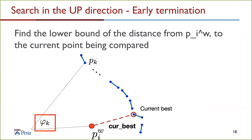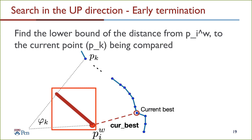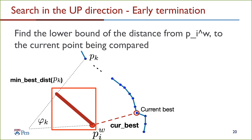To implement early termination, we define the angle in radians between the current transform point and the point being compared p_k as phi_k. We wish to compute the distance between the transform point p_i^w and the line connecting the origin of the scan (the reference point) and the current point p_k. This distance is the shortest distance that can be achieved between p_i^w and any point along the line of the k-th scan at angle phi_k, and hence it becomes the lower bound — a value we call the minimum best distance at p_k.